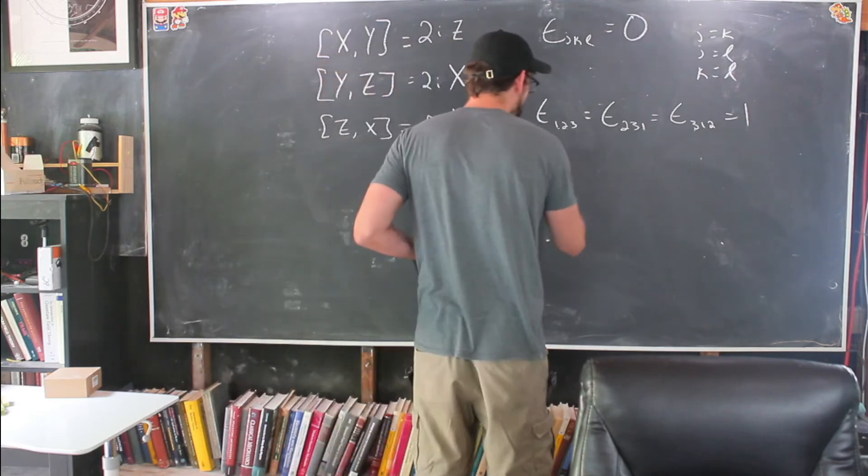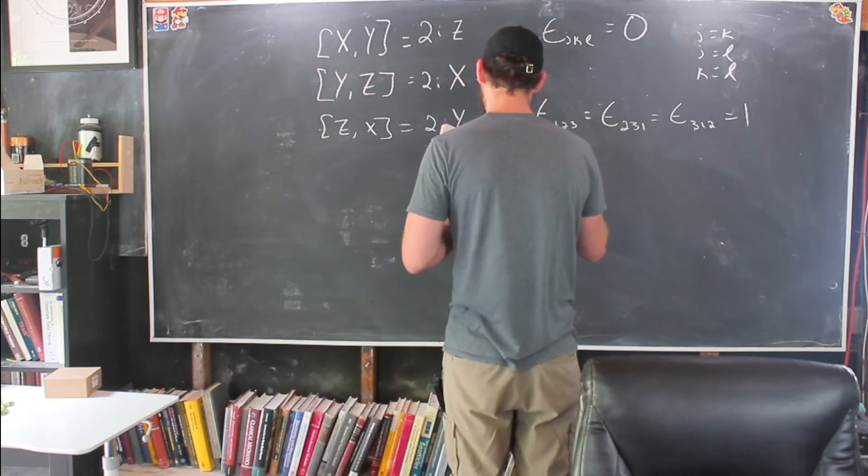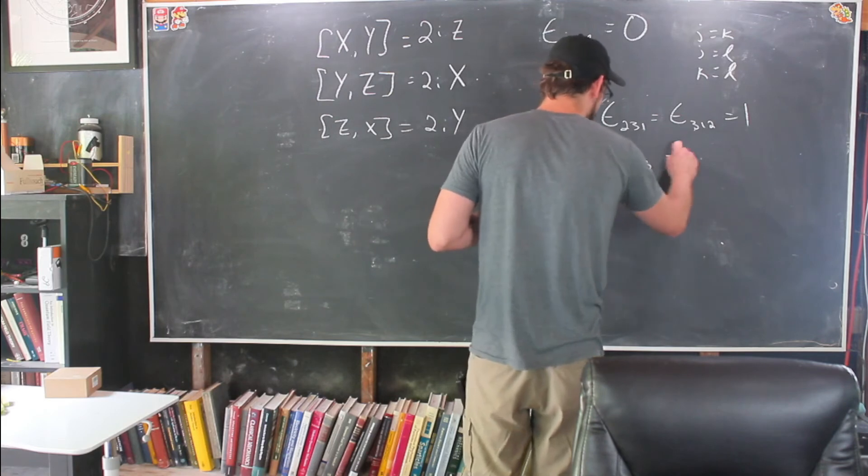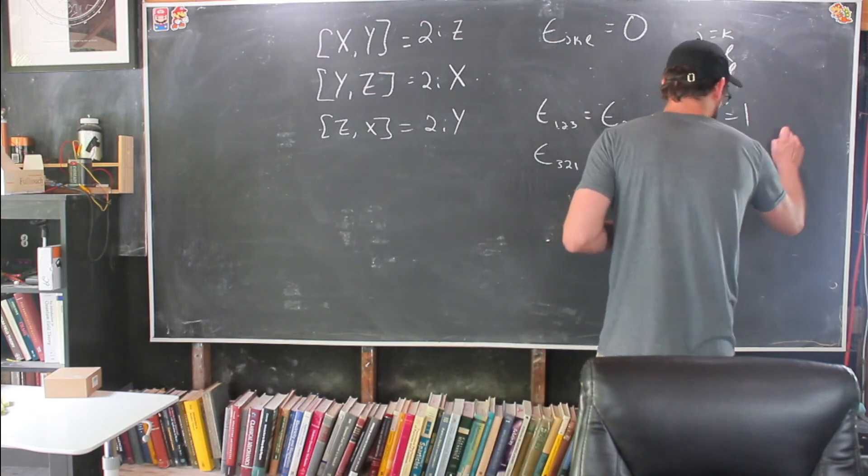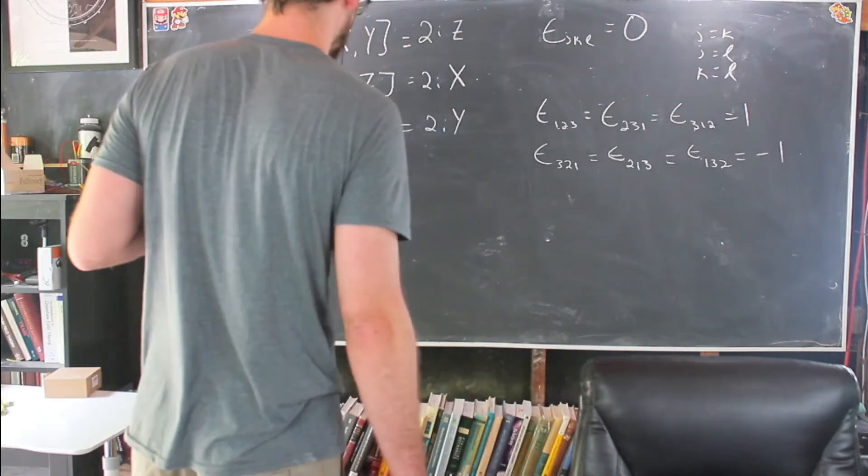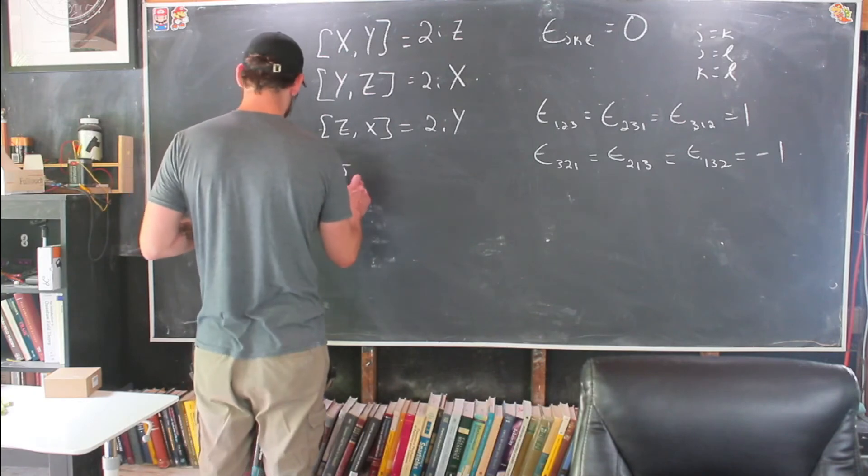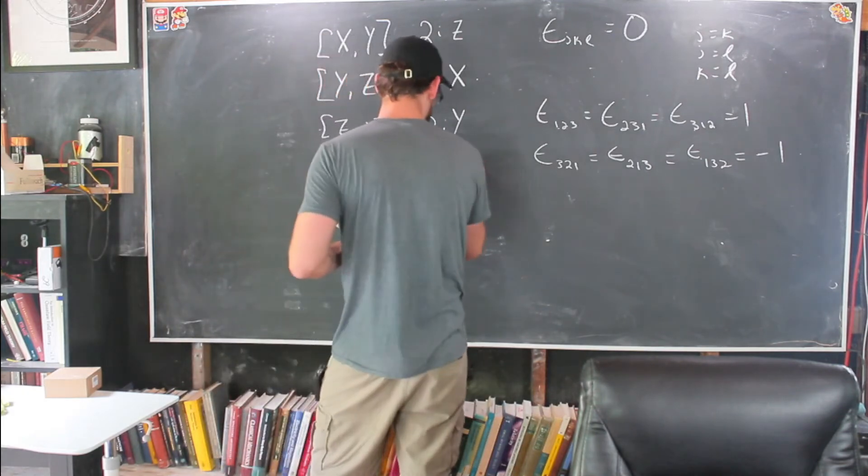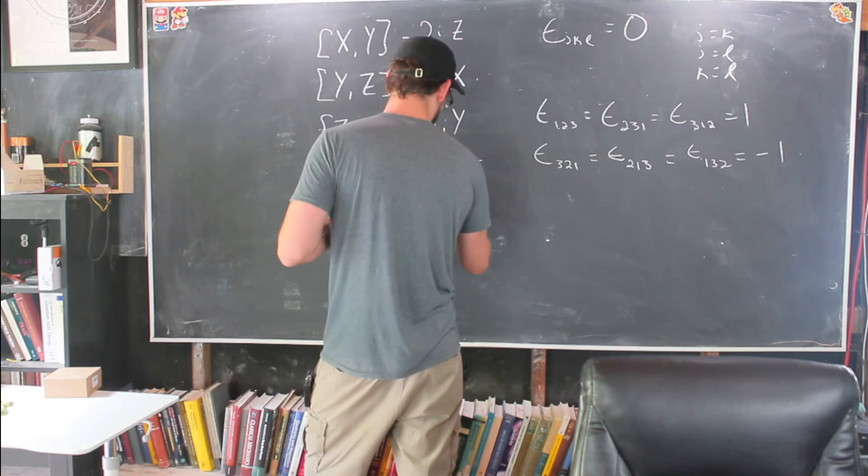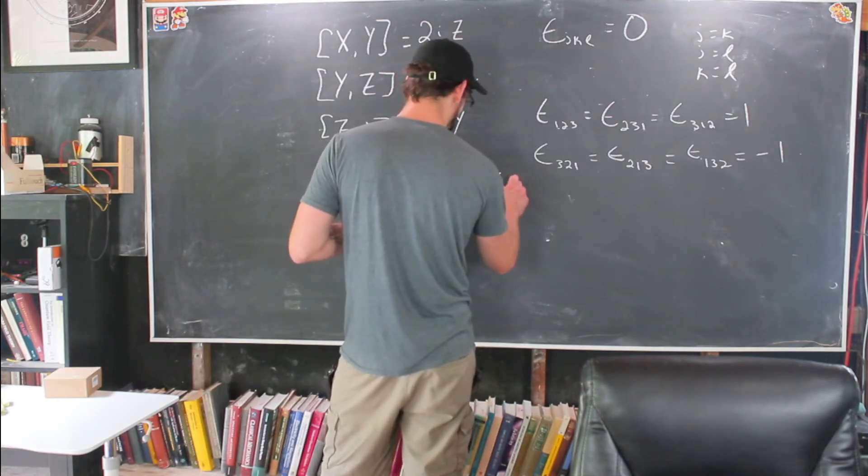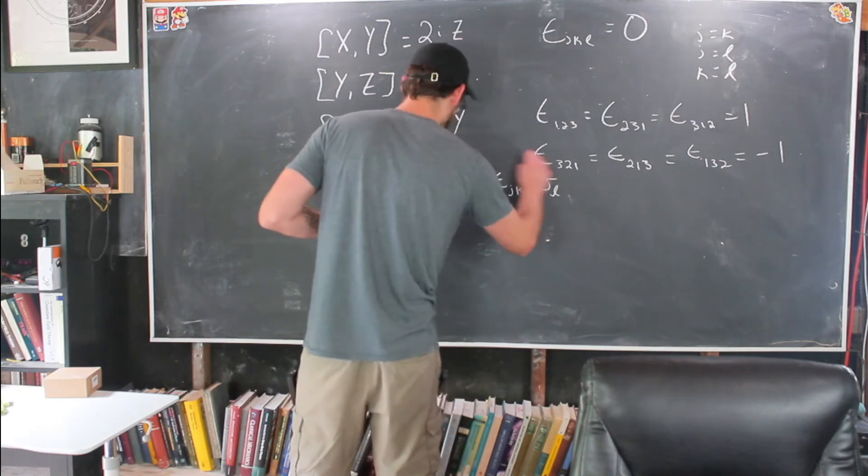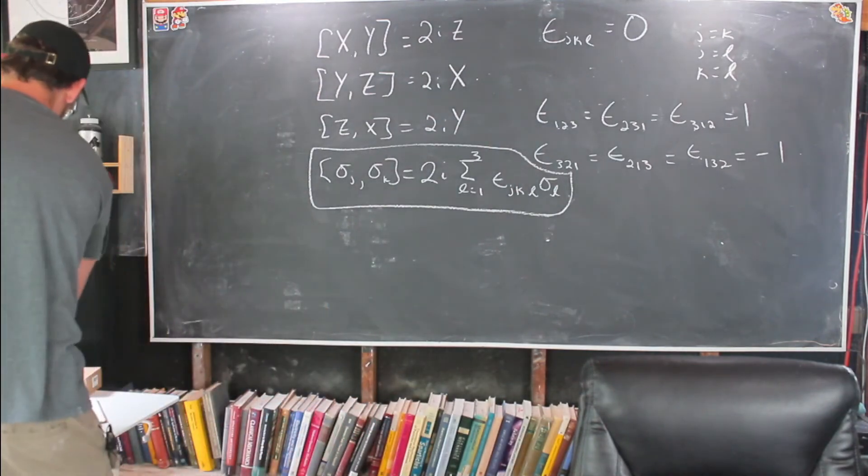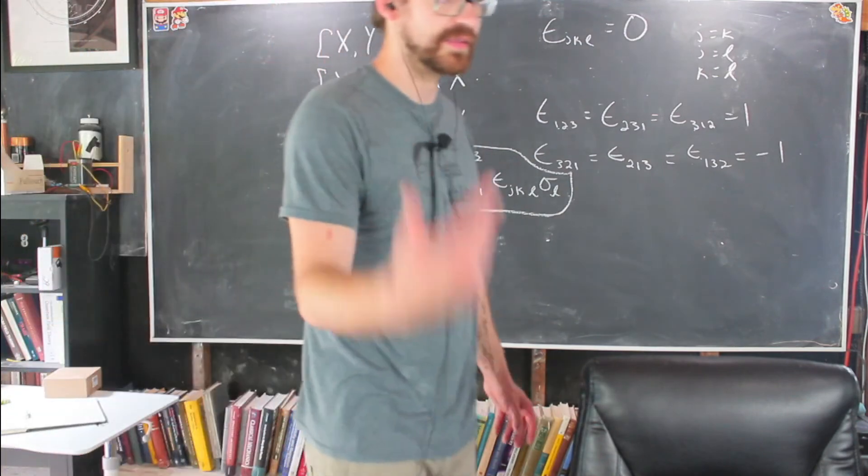Now if we don't have that same order, for instance, three, two, one is not that order. Two, one, three is not that order. And one, three, two is not that order. Those are equal to minus one. Let's just finish this up. We're almost done. So now we have a nice closed form for our Pauli matrix. Sigma J, sigma K is equal to two I times the sum over all of the indices from L equals one to three of Levi-Civita J, K, L, sigma L. And this is the nice thing that shows up all over the place in physics. This is the closed form of commutation relations between Pauli matrices.